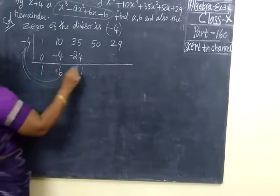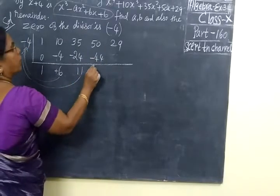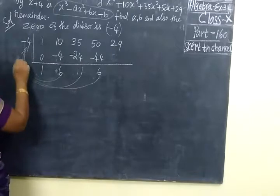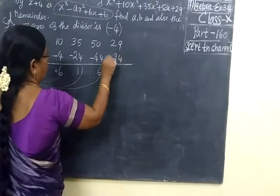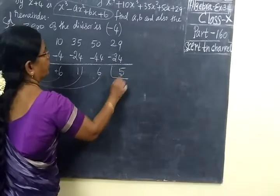So 11 into 4 is 44, then minus. Now we separate. We are getting 6. Now 6 into 4 is 24. Here you put minus. So the remainder is 5.